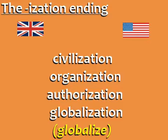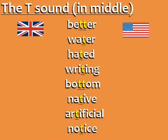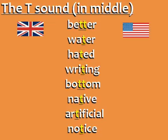Finally, the T sound in the middle of a word can be different in British and American English. In this situation, Americans often pronounce the letter T like a quick D sound. Listen to the difference: better, water, hated, writing, bottom, native, artificial, notice.